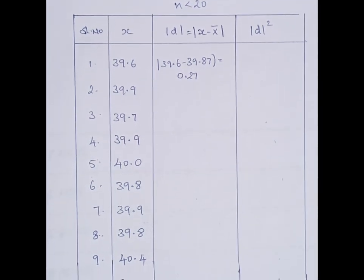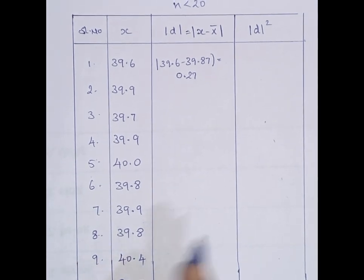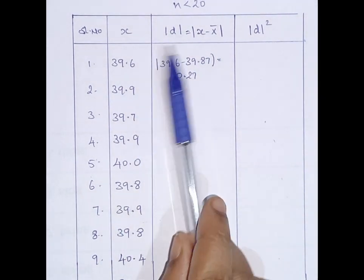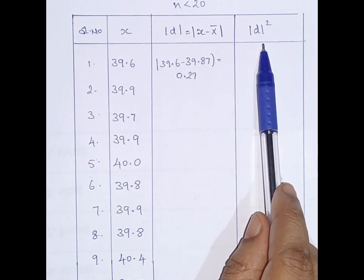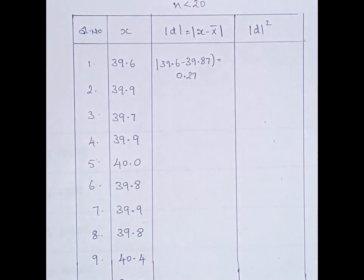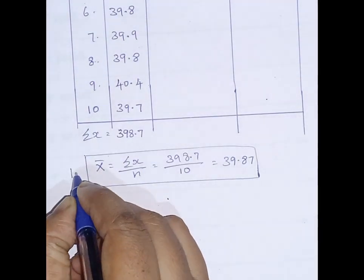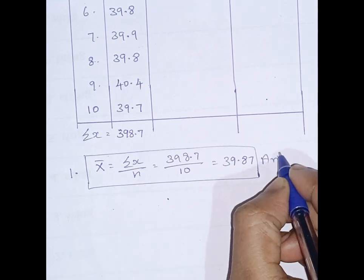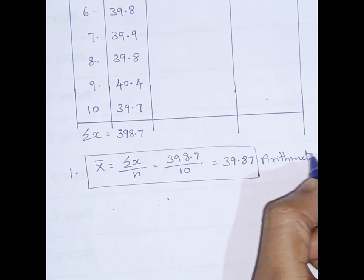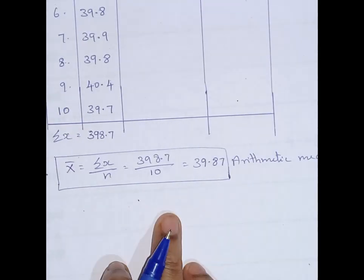I have written all 10 readings here. Based on the formula requirements, I have written modulus of D in one column and modulus of D squared in another column. Arithmetic mean is the summation of x divided by n — I have already found out the arithmetic mean here.